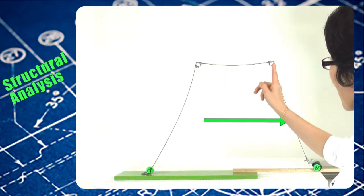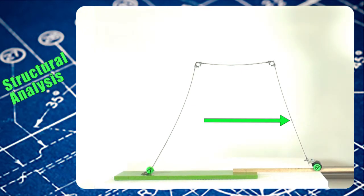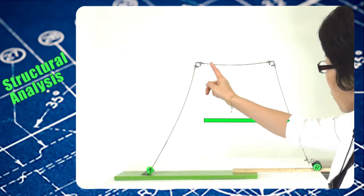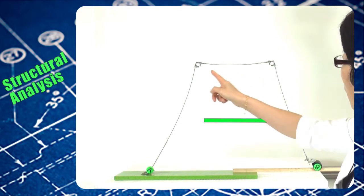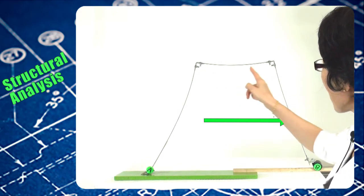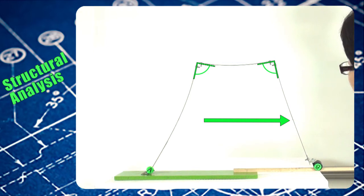Now looking at the two rigid joints: Before deformation, there were 90-degree angles between the beam and columns. After deformation, the 90-degree angles remain.